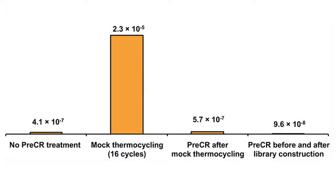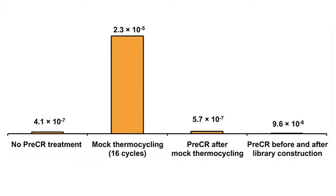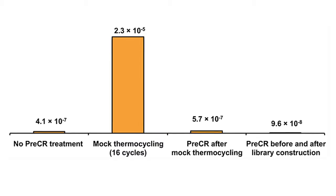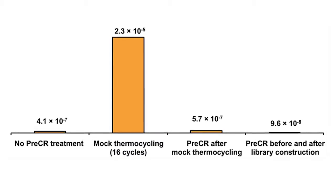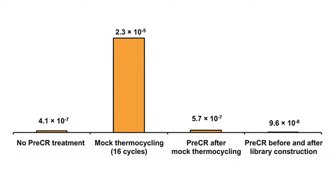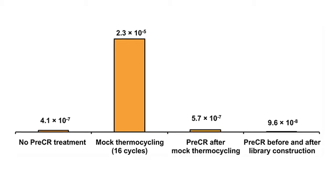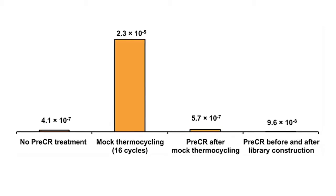Almost all of these mutations were C to T substitutions. We utilized an enzyme repair cocktail called PreCR, which specifically recognizes and repairs DNA damage, to determine that all of these C to T mutations that we observed were actually the result of cytosine deamination that occurs during thermocycling.